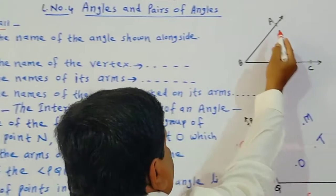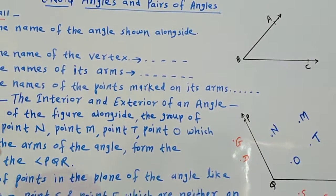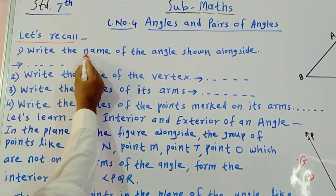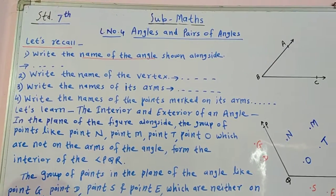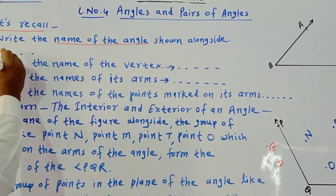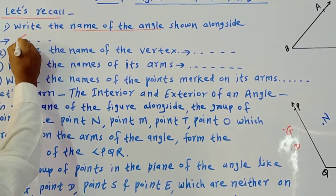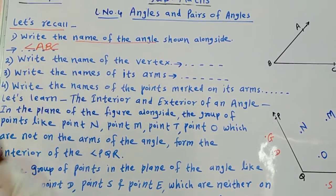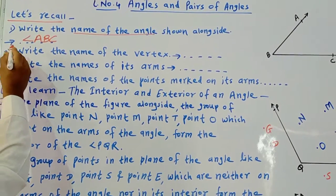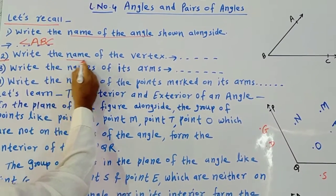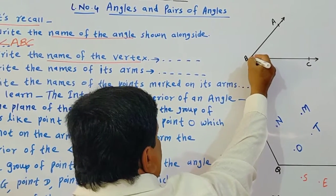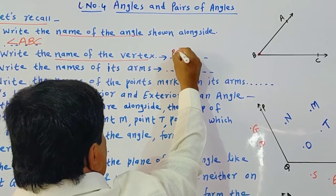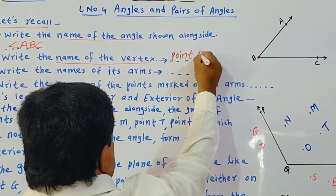When an angle is given here, angle ABC. Your first point is: write the name of the angle shown alongside. The name of the angle is angle ABC. The second point is: write the name of the vertex. This point B is the vertex, so write the answer here — point B.